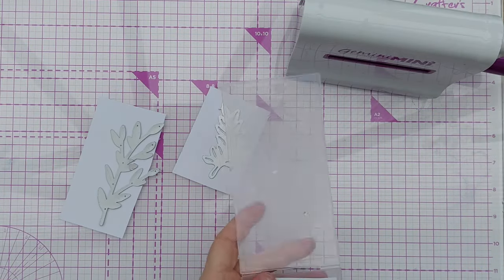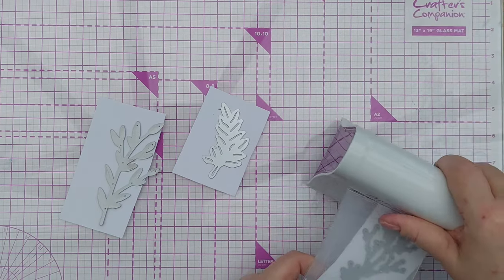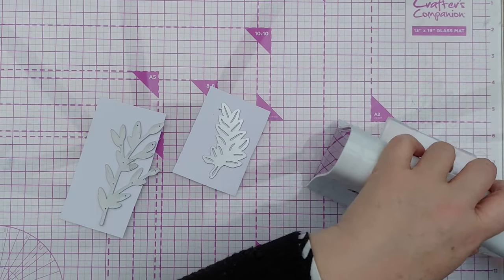Next I cut some leafy branches from smooth white cardstock and these are going to sit on the front of my card as a little cluster.